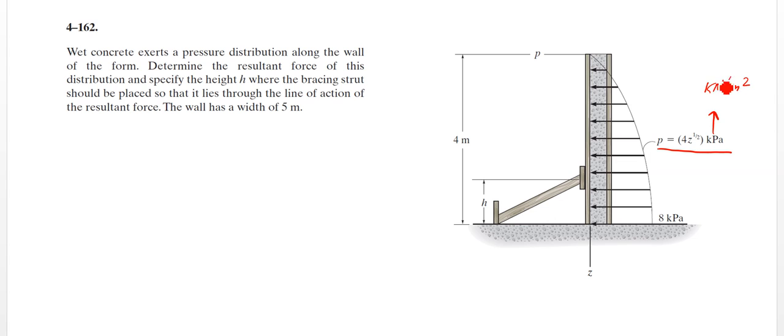So to get that in our normal loading distribution, we need to multiply by some length scale. Luckily, we're told in the problem that the wall has a width of 5 meters. And then what we're looking for here is the resultant force and the height where that bracing strut would be placed so it lies through that line of action of that resultant force.